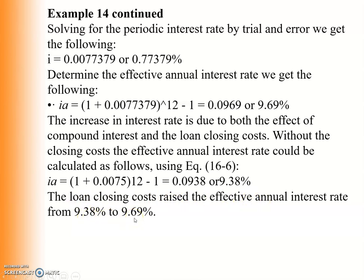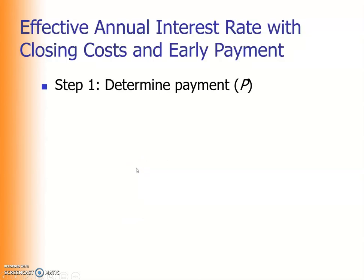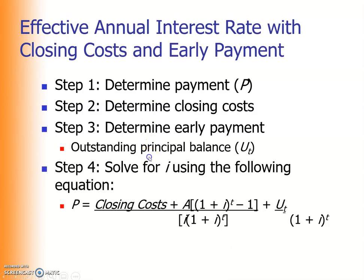So the loan closing costs raise the effective annual interest rate from 9.38% to 9.69%. There is another case to consider: the effective annual interest rate with closing costs and early payment. The steps are: first, determine the payment; second, determine the closing costs and the early payment outstanding principal balance; then solve for i using the appropriate equation.